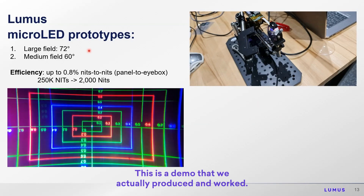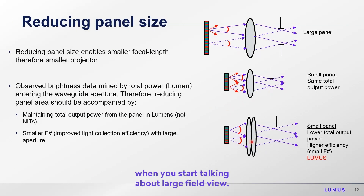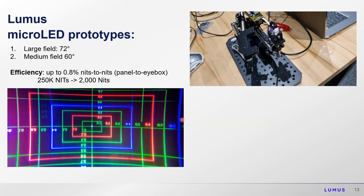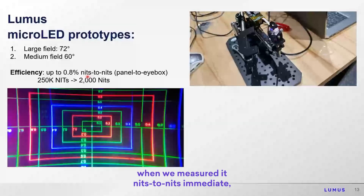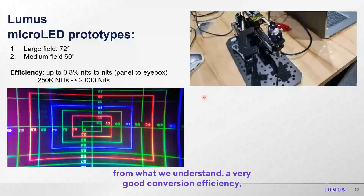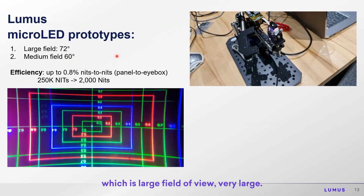This is a demo we actually produced and it worked. Note that all of this is way more challenging with large field of view, and everyone is moving towards 70 degrees. This is a 70-degree field of view image — some of it is very bright and saturating. We were able to achieve 70 degrees (actually 80 degrees in one system and 60 degrees in another) and achieved 0.8% efficiency measured nits-to-nits: 250,000 nits on the panel translated to about 2,000 nits in the eye box, which we understand is a very good conversion efficiency, far better than any alternative at 60 to 70 degrees field of view.